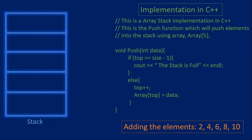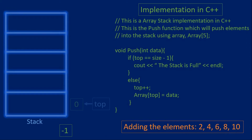For this example we'll have an array that can store five elements and we'll use C++ for this function. We have an empty stack where top is equal to negative one. When we push the element two, the function first checks if top is equal to size minus one — the last index in the stack. The stack is empty so we skip to the else statement, increment top by one to zero, and add element two at index zero of the stack.